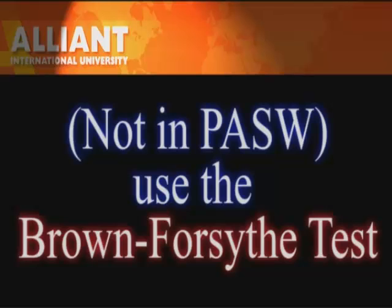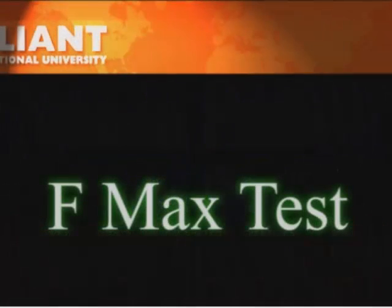The last type of variance test you can use is the Fmax test, which is where you simply take your largest variance divided by your smallest variance and get a ratio. If that ratio is greater than 9, then it's generally significant and you have violated homogeneity of variance.